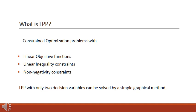Welcome to my tutorial on Linear Programming Problem, or LPP. LPP is a very useful tool for making economic decisions. It is a type of constraint optimization where both the objective function and the constraints are linear. In a LPP, we have a linear objective function, linear inequality constraints, and non-negativity constraints.